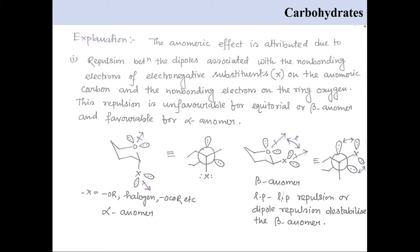The repulsion between the dipoles associated with the non-bonding electrons of electronegative substituents on the anomeric carbon and the non-bonding electrons on the ring oxygen. This repulsion is unfavorable for equatorial or beta-anomer and favorable for alpha-anomer.